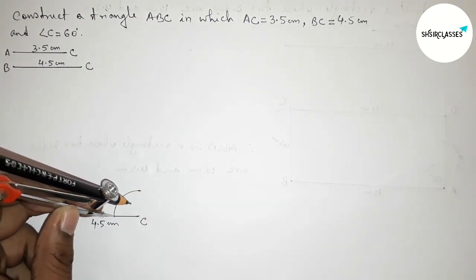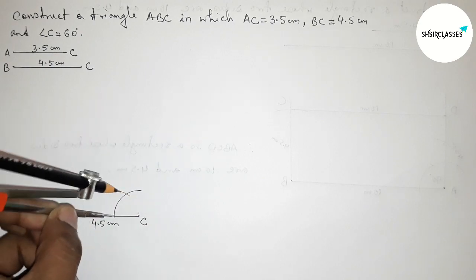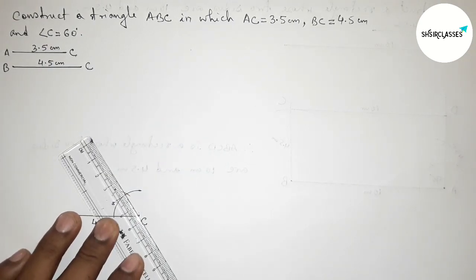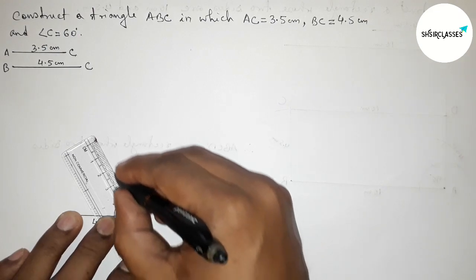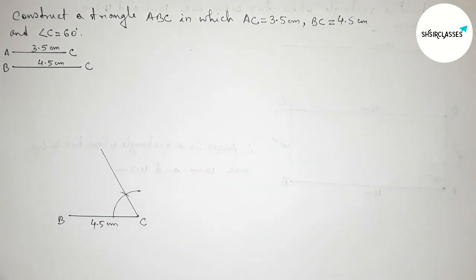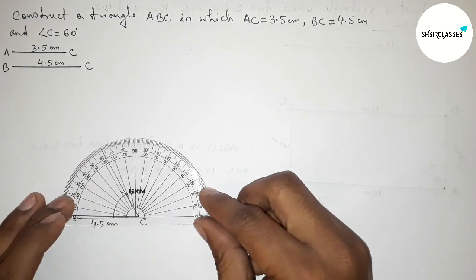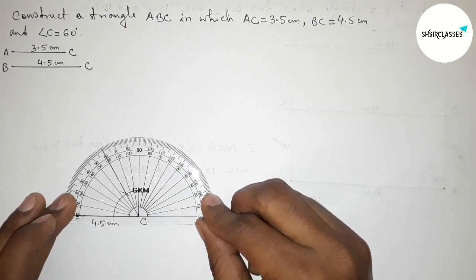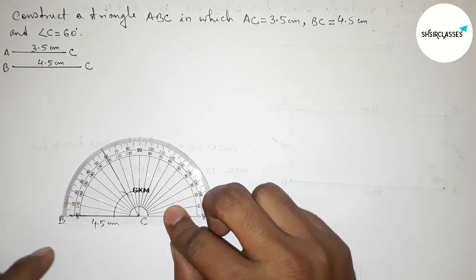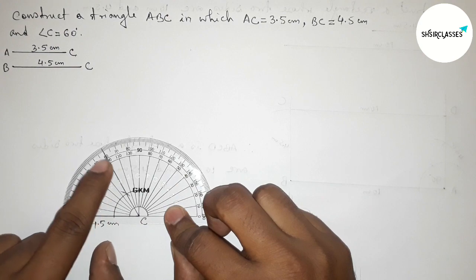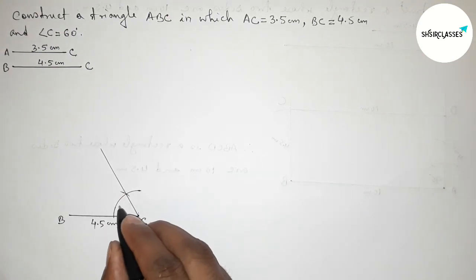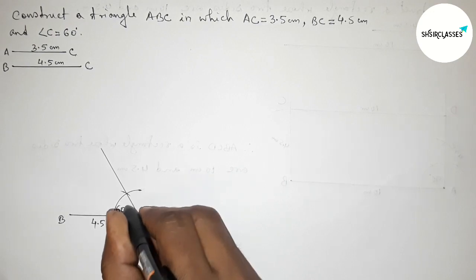Again putting the compass at the arc intersection and taking the same length, cutting another arc. Now joining this line to get a 60 degree angle. Checking this with the help of a protractor — this is perfectly a 60 degree angle.